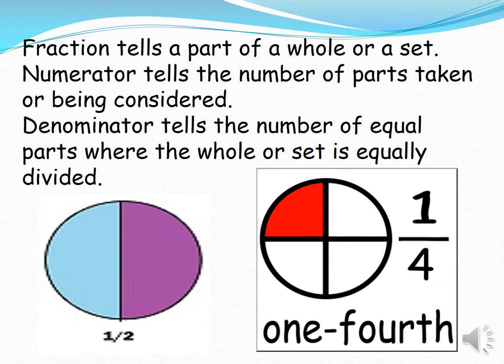Fraction tells a part of a whole or a set. Numerator tells the number of parts taken or being considered. Denominator tells the number of equal parts where the whole or set is equally divided.